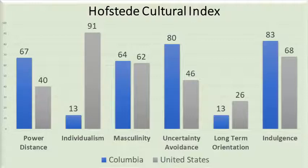Colombia's Individualism Score is 13. Colombians tend to focus more on collective success within a group as opposed to individual success. These groups may include extended families, social classes, labor groups, or gangs. Colombia's Uncertainty Avoidance score is 80, meaning Colombians go to great lengths to plan and control the future and are likely to expect detailed plans and policies.